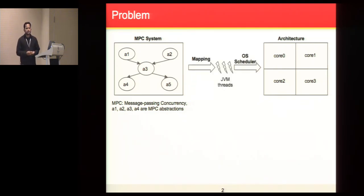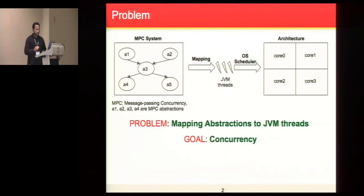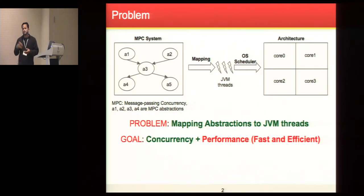In case of JVM-based MPC systems, this problem has two parts: mapping concurrent entities to JVM threads and scheduling JVM threads to CPU cores. Fortunately, the OS scheduler takes care of the second problem of scheduling the JVM threads. In this work, I'm going to talk about a static technique that maps MPC abstractions to JVM threads. Often, concurrency is the main concern while you perform the mapping, such that you do not face any data race, deadlock, or starvation. But addressing concurrency concerns may not always give you performance benefits. In this technique, we show that we can achieve performance by also satisfying concurrency concerns.